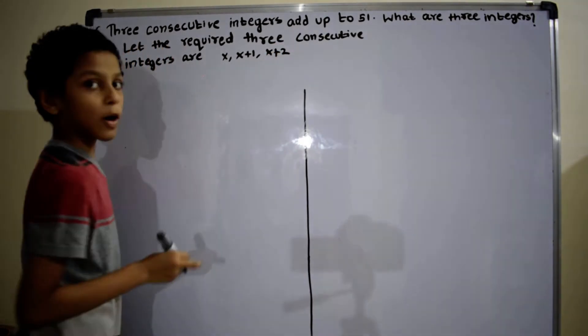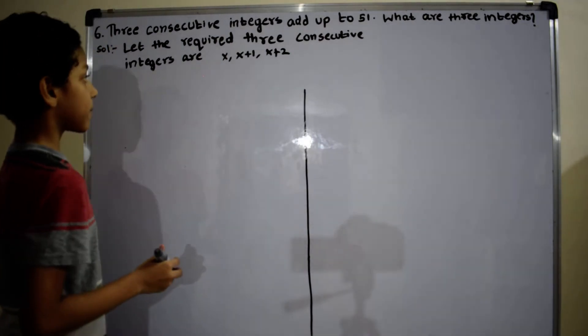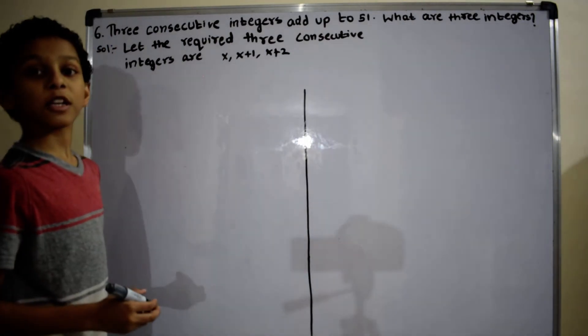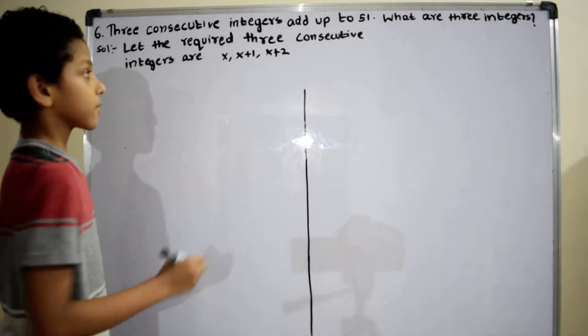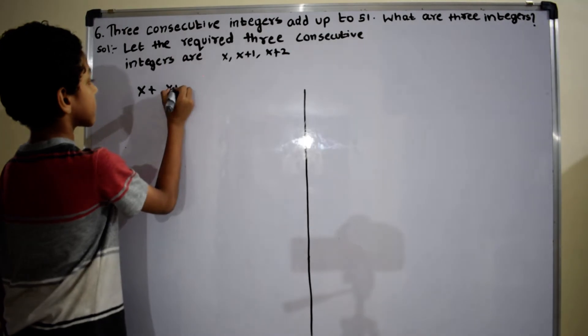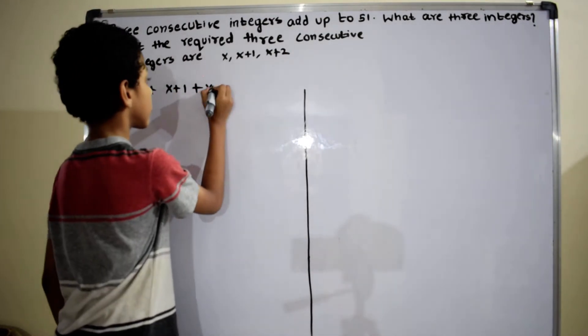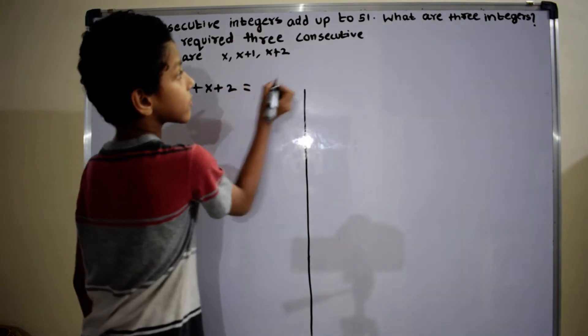Now form the equation for the given problem. The sum of 3 consecutive integers is x plus x plus 1 plus x plus 2 equals 51.